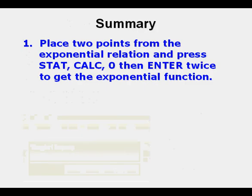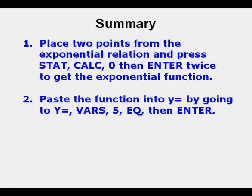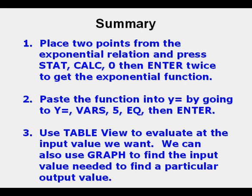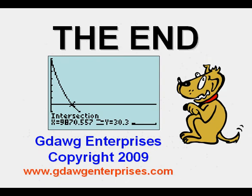To summarize: first, place two points from the exponential correlation and press Stat Calc 0, then Enter twice to get the exponential function. Paste the function into Y= by going to Vars, 5, then arrow twice to the right to EQ and press Enter. Use table view to evaluate for a desired input value, or use the graph to find the input value that produces a particular output value. Thanks for visiting — I hope this lesson has been enjoyable.